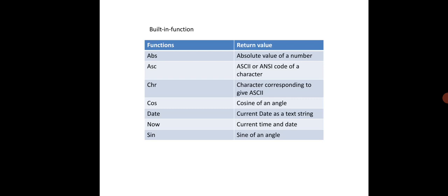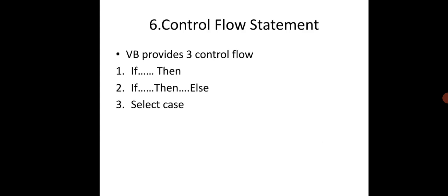Some built-in functions include: Abs — returns the absolute value of a number; Asc — returns the ASCII code of a character; Chr — returns the character corresponding to a given ASCII code; Cos — returns the cosine of an angle; Date — returns the current date as a text string; Now — returns the current time and date; and Sin — returns the sine of an angle.